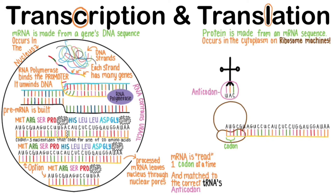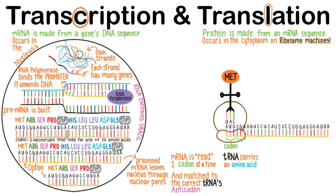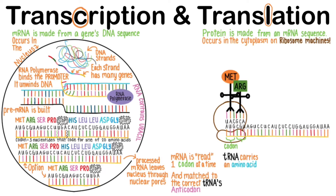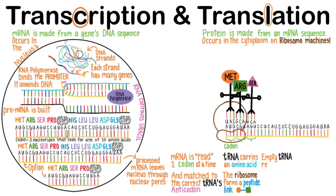The anticodon must be complementary to the codon on the mRNA in order for the ribosome to let it bind. Each tRNA carries an amino acid. The tRNA that matches the AUG codon always carries the amino acid methionine. The next codon requires a match for CGU, and this particular matching tRNA always carries the amino acid arginine. Once the second correct tRNA is matched to its codon, the ribosome forms a peptide link between the two amino acids, covalently bonding them together. The next codon calls for serine, but the ribosome can only work with two tRNAs at once, so the first one leaves its methionine behind and the empty tRNA is released.